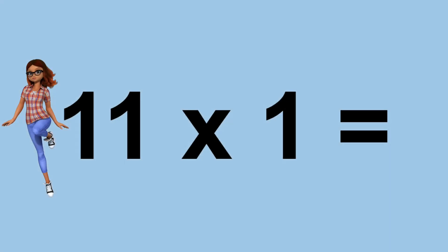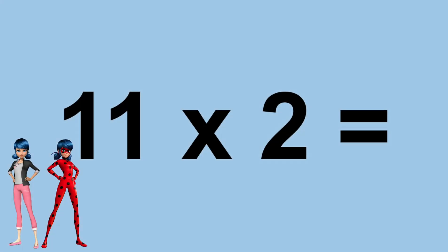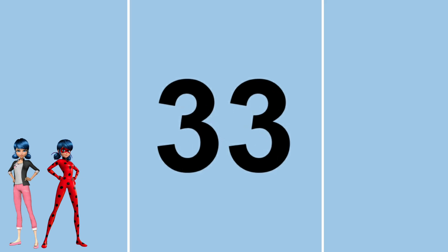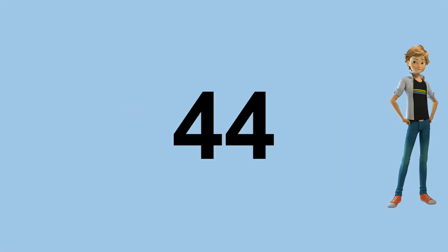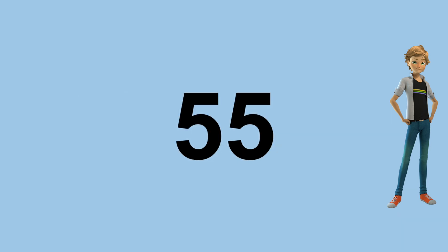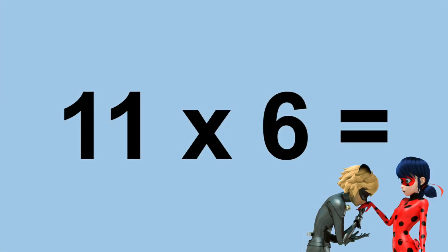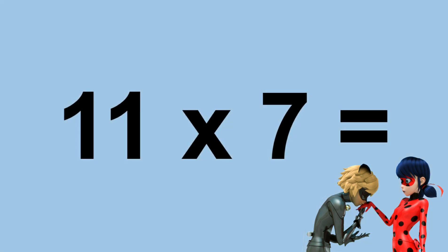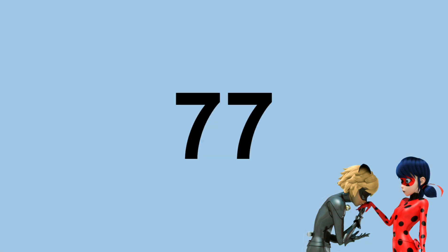Eleven times zero equals zero. Eleven times one equals eleven. Eleven times two equals twenty-two. Eleven times three equals thirty-three. Eleven times four equals forty-four. Eleven times five equals fifty-five. Eleven times six equals sixty-six. Eleven times seven equals seventy-seven.